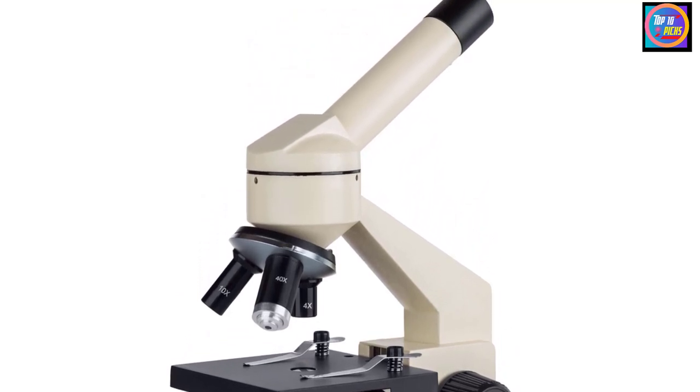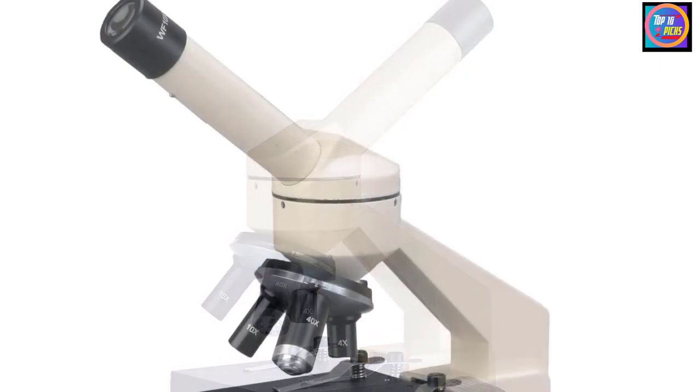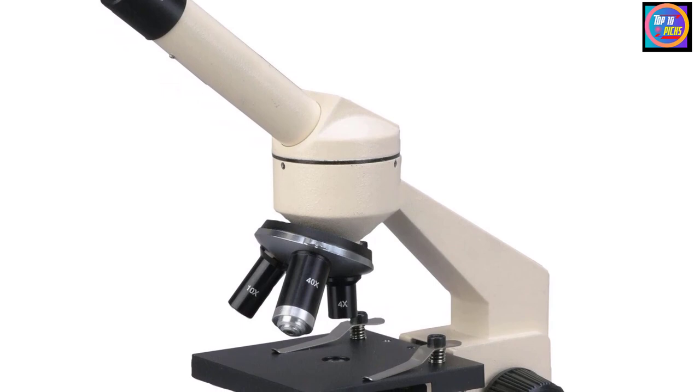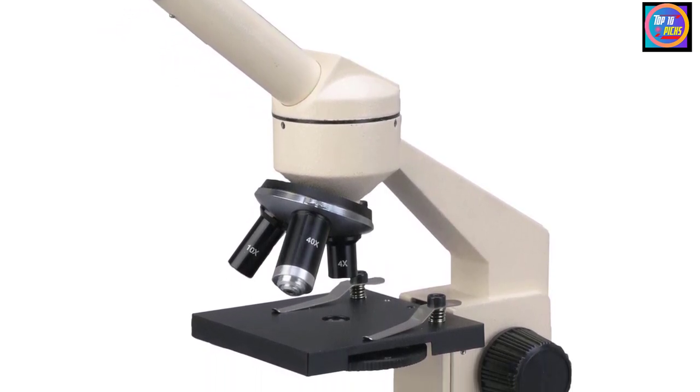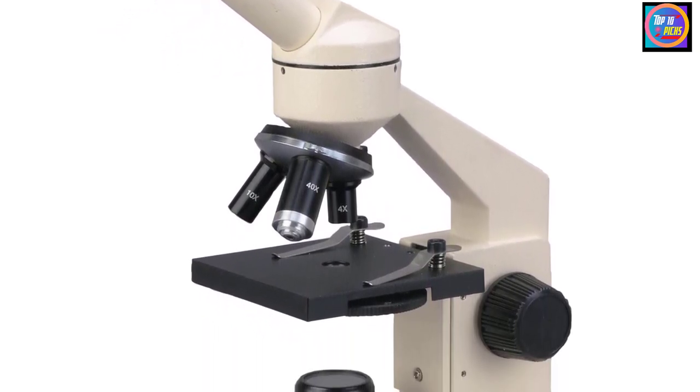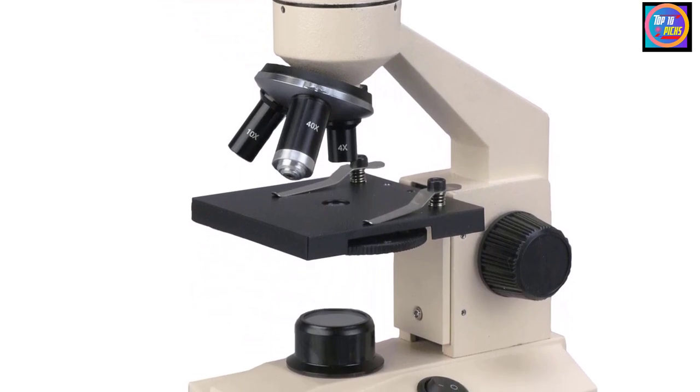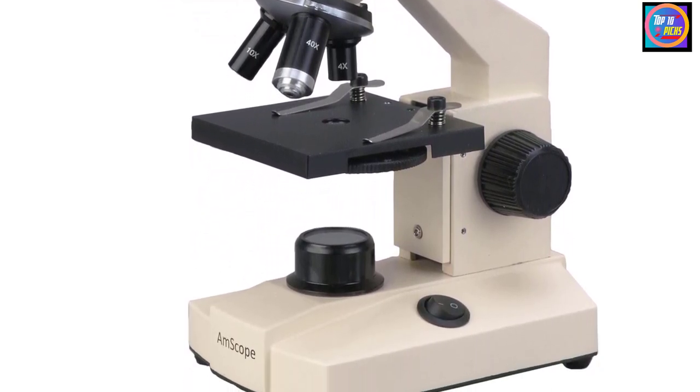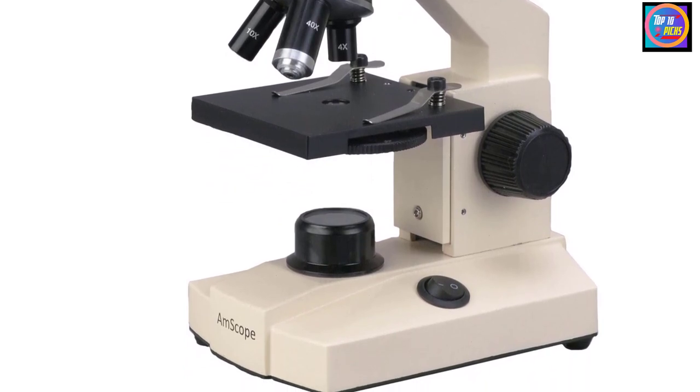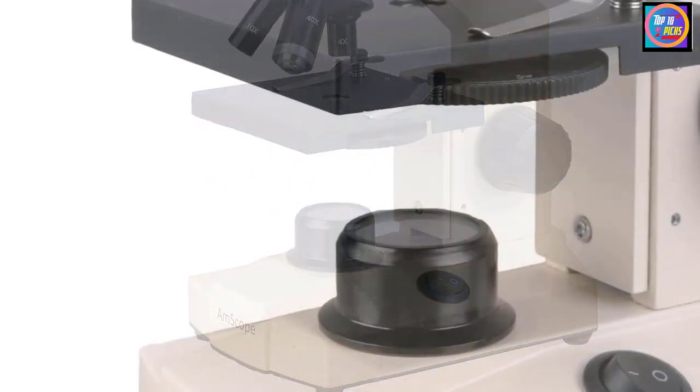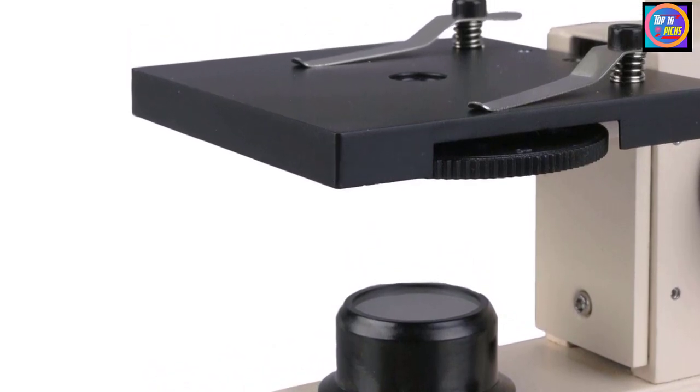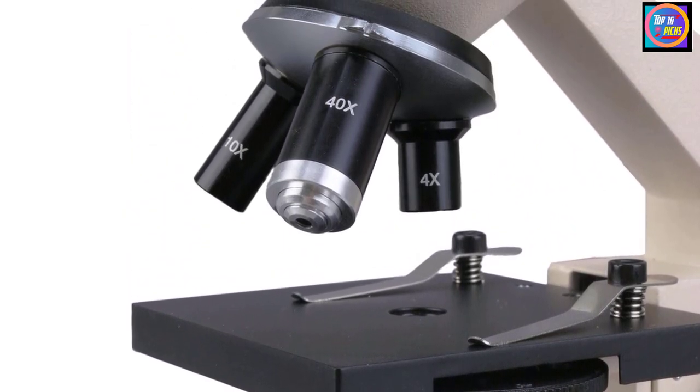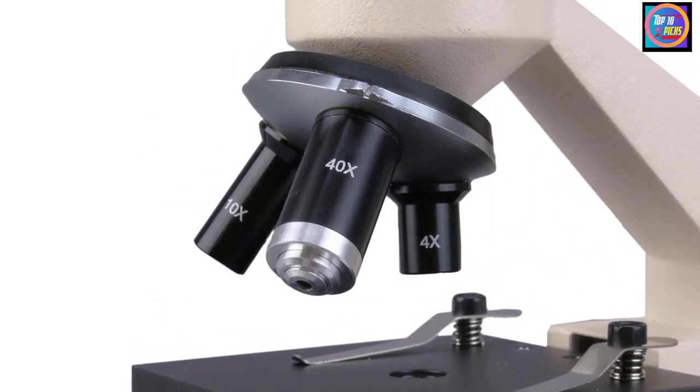It has a sturdy all-metal body with an enamel finish, 5 magnification settings up to 1000x high-quality coated optical glass, plus coarse and fine combo focus knobs on both sides for precise adjustments without having to lift your hands. There's also 3 objective lenses and 2 wide-field eyepieces. The main drawback is that the microscope doesn't have a dual LED light to see opaque specimens illuminated from above.